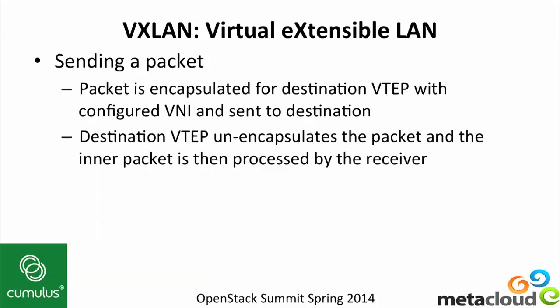How do we send a packet then? It's pretty simple. The packet is encapsulated and delivered to the VXLAN interface. It's encapsulated for the destination VTEP configured for that VNI. We take the inner Ethernet frame, put a VXLAN header on it — which is basically a VNI and a few flags — then wrap it in that outer UDP header, and send it on the wire. The destination receives it, unencapsulates it, and then the inner packet is processed by the receiver, whether that's a switch that's going to switch it somewhere or a Linux box that's going to deliver it to a bridge to go to a VM.